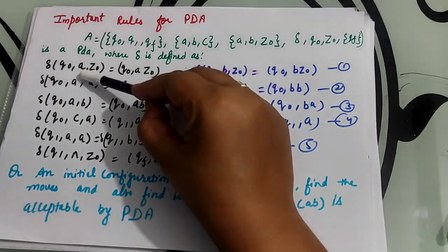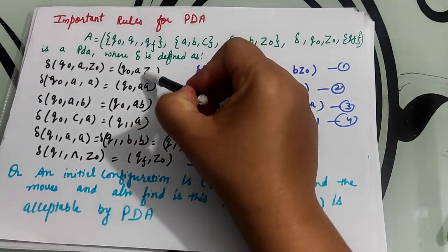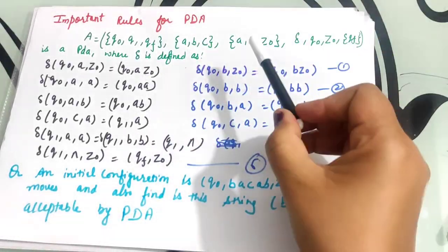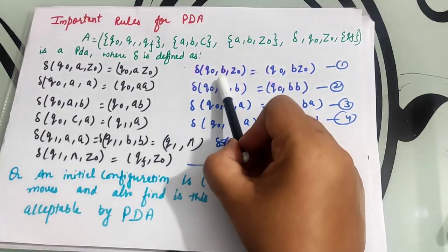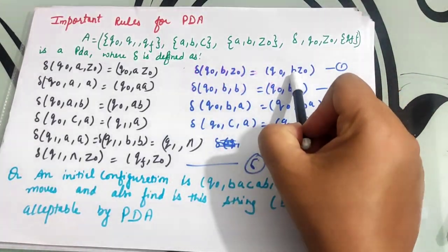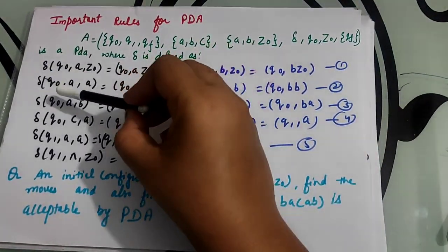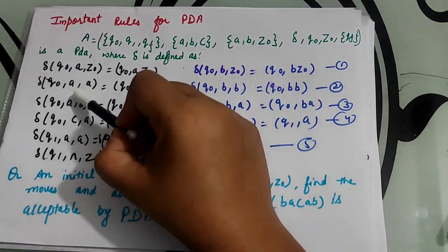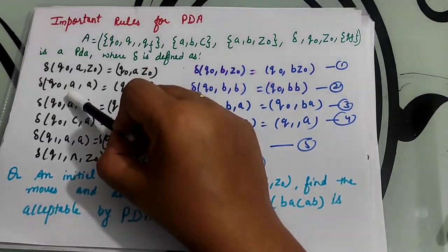At q0, the initial state, if symbol 'a' comes for insertion and the stack is empty, then push 'a' into the stack. Same with 'b' — if 'b' comes for insertion and the stack is empty, then push 'b' into the stack. Now go to another rule: suppose the stack already has 'a' and you want to insert 'a' again.